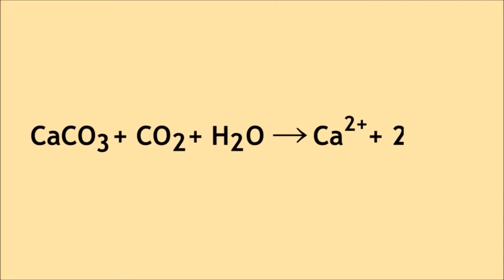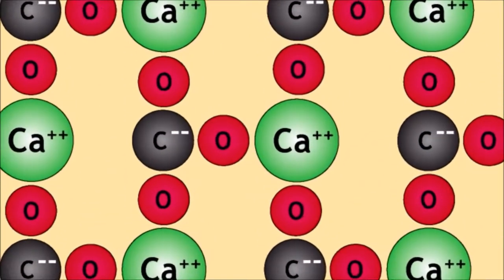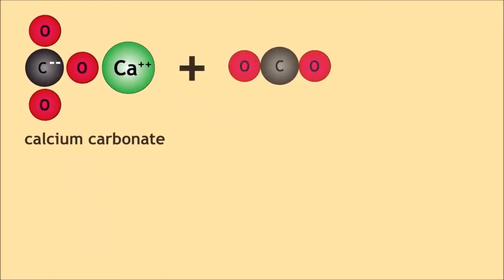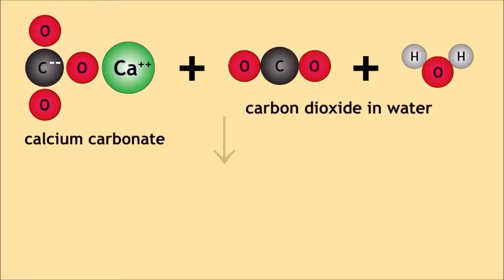Here is the equation. Calcium carbonate reacts with the carbon dioxide in the rain to form soluble calcium hydrogen carbonate.